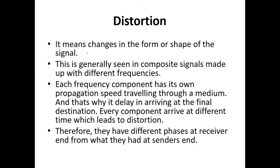Distortion means a change in the form or shape of the signal. This is generally seen in composite signals. The components of a signal arrive at different times, which leads to distortion. Therefore, they have different phases at the receiver end from what they had at the sender's end. That is known as distortion.